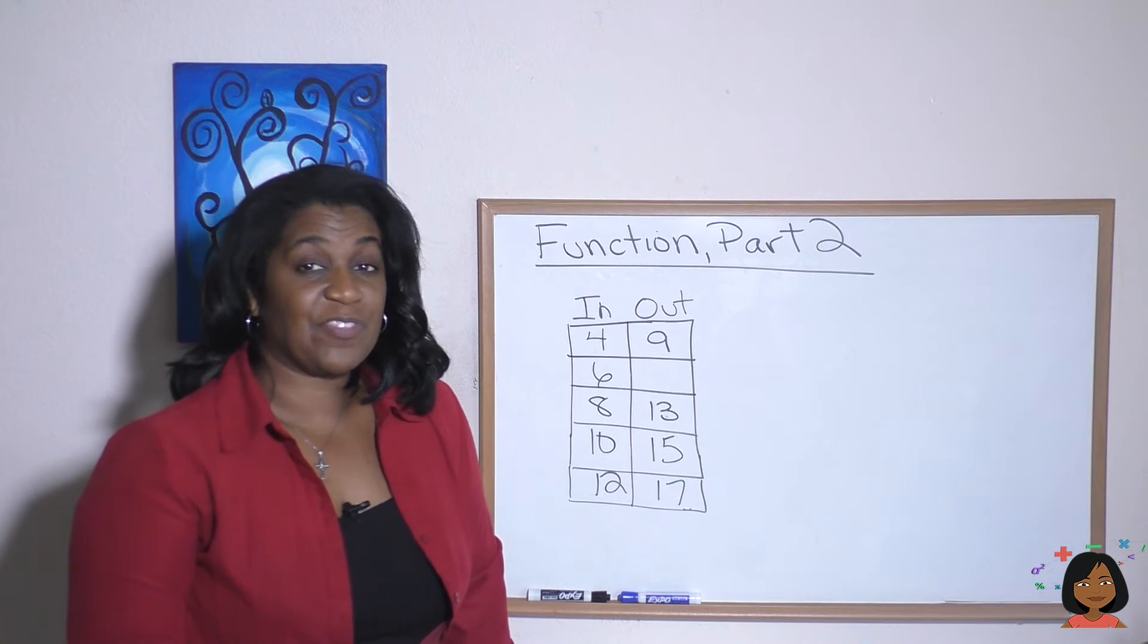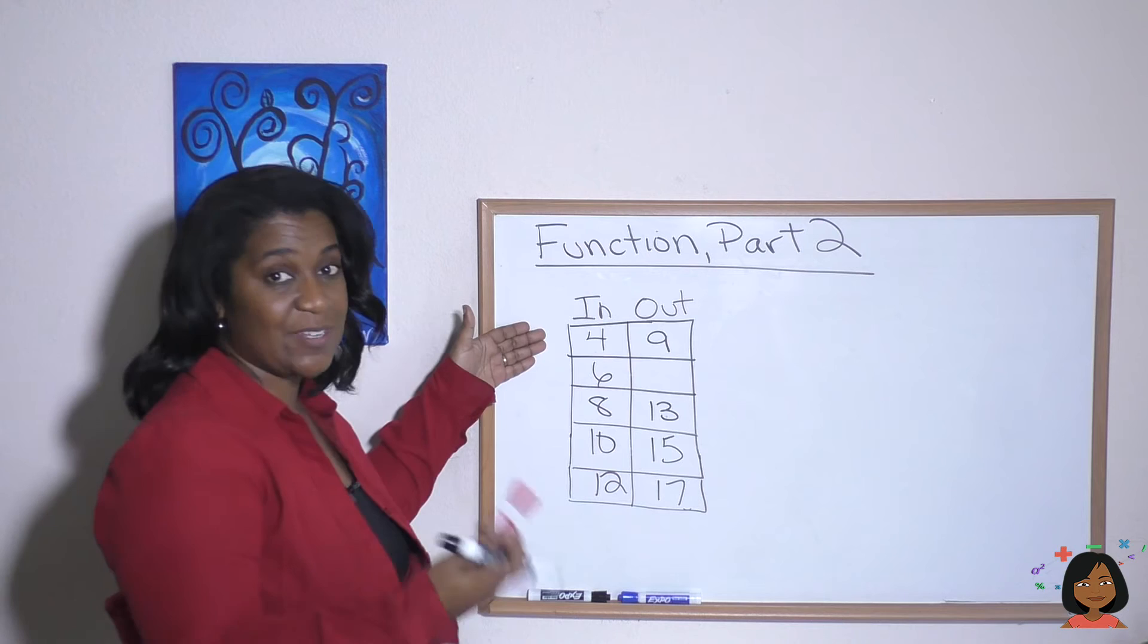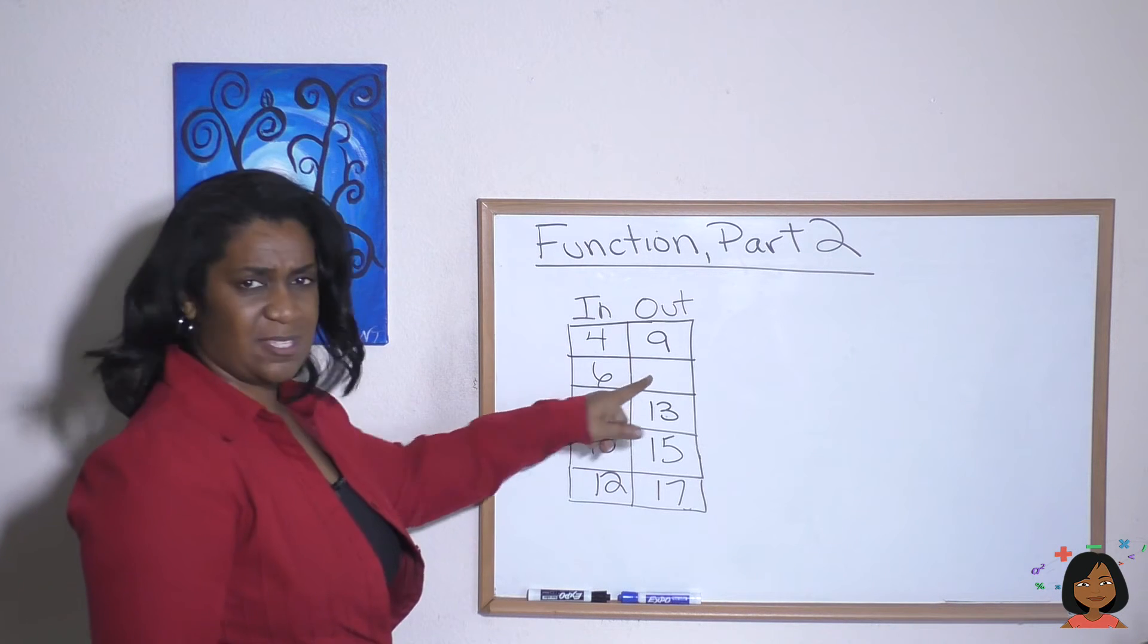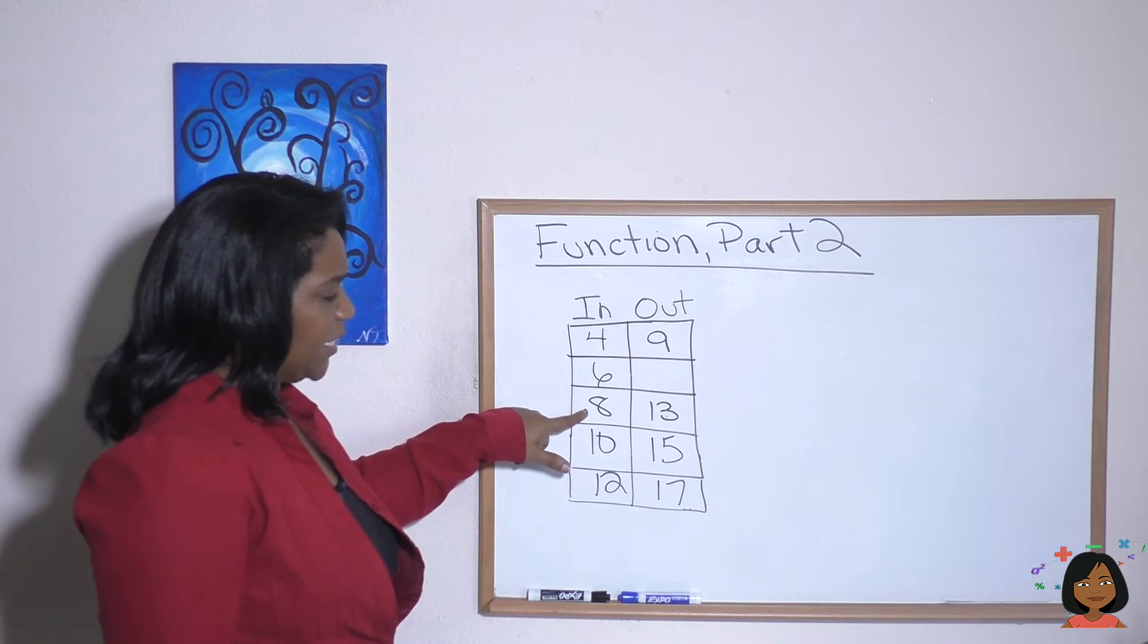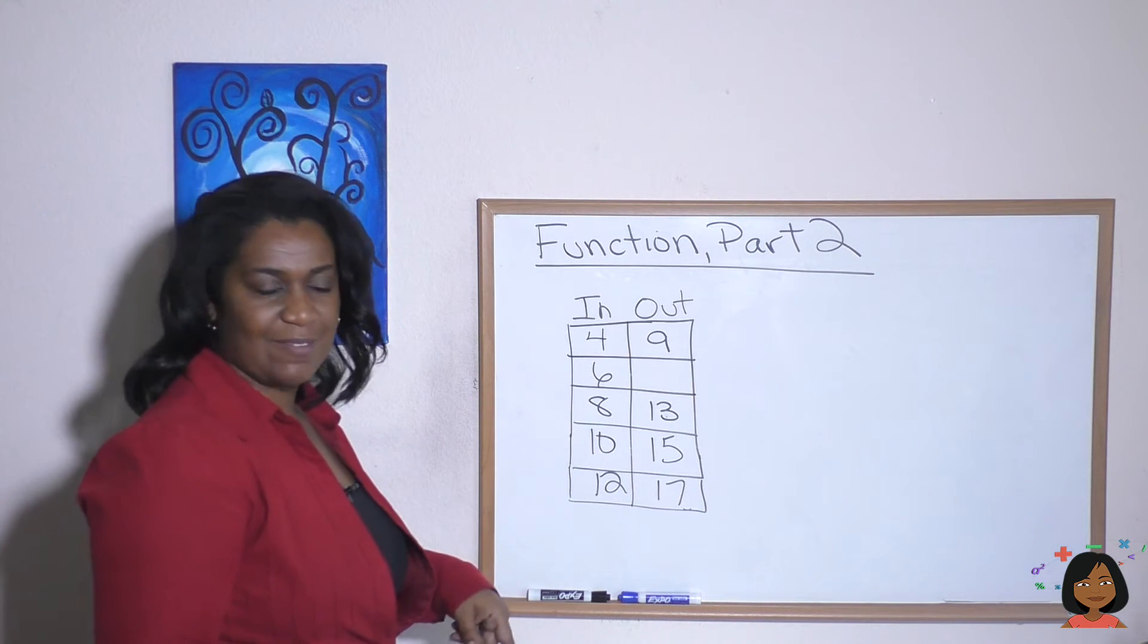Let's try to figure out the pattern here. So we've got in our in, we have put in four, but we end up with nine on our out. We've got to find this missing number. Here's eight and thirteen, ten and fifteen, twelve and seventeen.